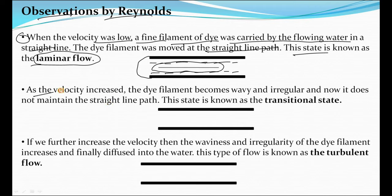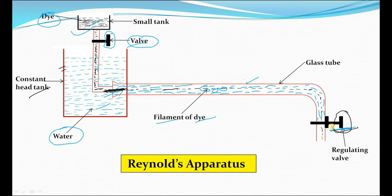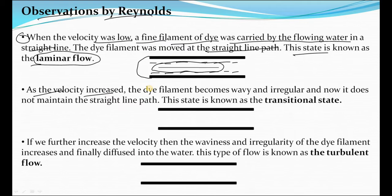As we increase the velocity, in the second step, by opening the regulating valve further, the dye filament becomes wavy and irregular. It does not maintain the straight line path as earlier. This is known as the transitional state — transitional flow. The dye will follow a wavy path because as we increase the velocity, the motion of the dye increases and it becomes irregular and wavy.